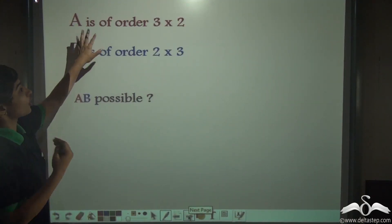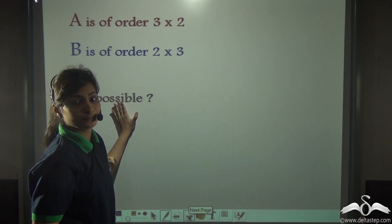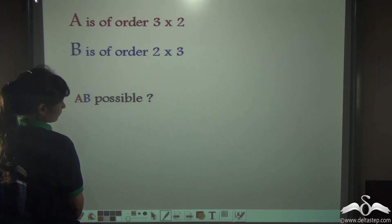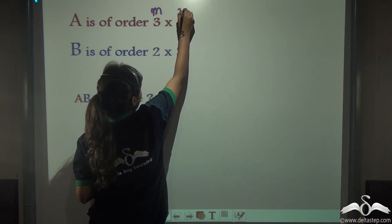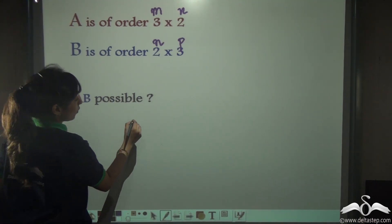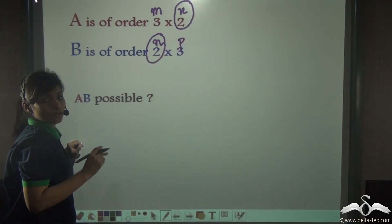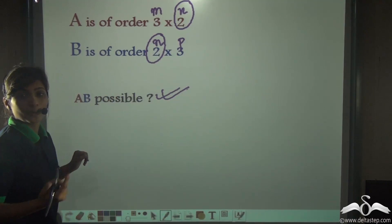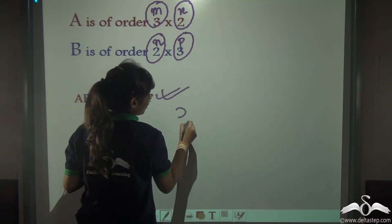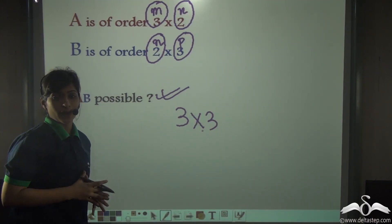Again, A is of order 3 by 2 and B is of order 2 by 3. Is AB possible? Writing it out: M by N is 3 by 2 and N by P is 2 by 3. Both inner values are 2 and 2 — they are the same, so this is possible. What will be the order of the product matrix? M by P: 3 by 3 will be the order of the product matrix. I hope you are now clear with the concept of multiplication of matrices.